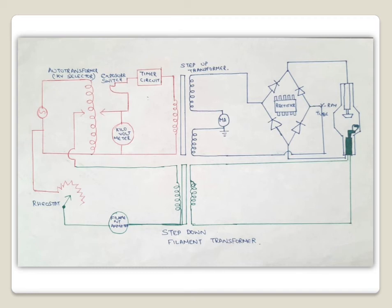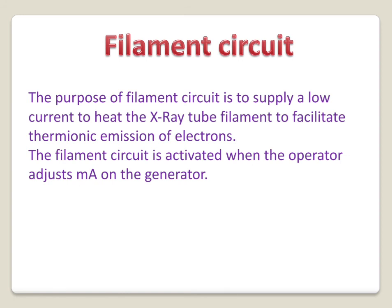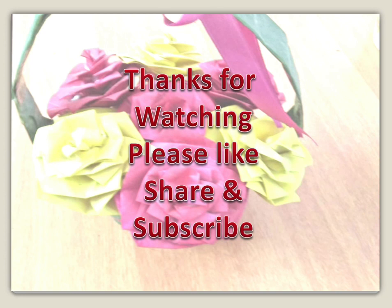So these are all the different circuits present in the x-ray circuit. The filament circuit is activated only when the operator adjusts the milliampere on the generator, and its purpose is to supply current to heat the x-ray tube filament. The purpose of the secondary circuit is to provide direct current to the x-ray tube. The primary circuit acts as a source of power for both the secondary and the filament circuit.